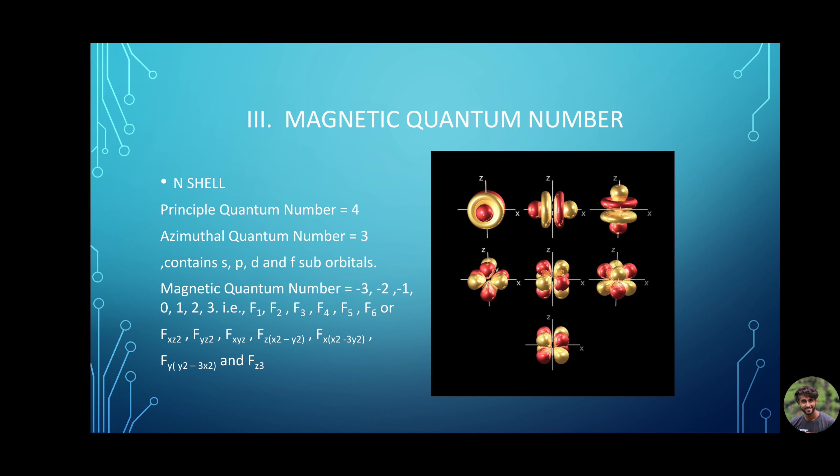Likewise, f subshell has -3, -2, -1, 0, 1, 2, 3. That is, f(xz²), f(yz²), f(xyz), fz(x²-y²), fx(x²-3y²), fy(y²-3x²) and f(z³). This is how an f orbital looks like.